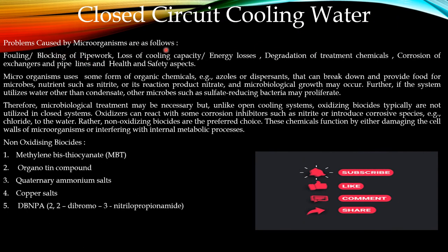Problems caused by microorganisms include fouling and blocking of pipes, power loss, loss of cooling water capacity, energy losses, degradation of treatment chemicals, corrosion of exchangers and pipelines, and health and safety impacts. Microorganisms can use organic chemicals such as azoles or dispersants as food. Nutrients such as nitrate and its reaction products can promote microbiological growth. If the system utilizes water other than condensate, microbes such as sulfate-reducing bacteria (SRB) may proliferate, further increasing microbiological growth.